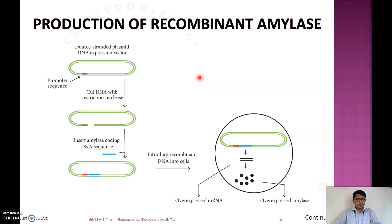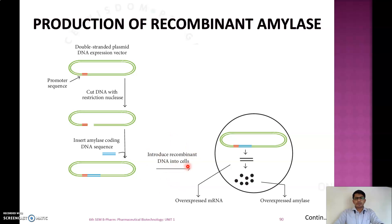Here is a pictorial representation of recombinant amylase production. First, select a double-stranded plasmid DNA expression vector and cut it using a restriction endonuclease enzyme. Insert the gene encoding alpha amylase enzyme, which is cut from the appropriate bacteria, into the vector to get a recombinant vector. This recombinant vector is then introduced into a bacterial cell and cultured in appropriate media to achieve efficient gene expression as alpha amylase.